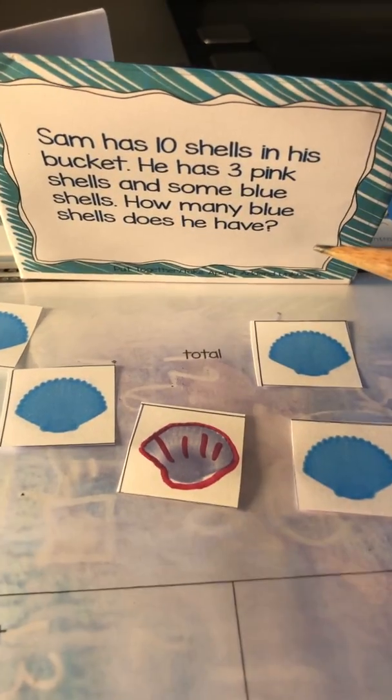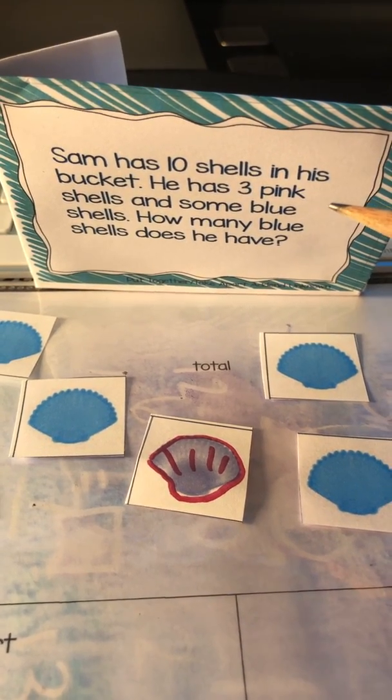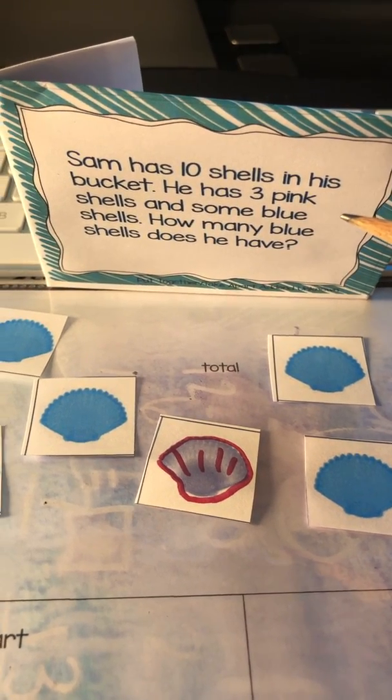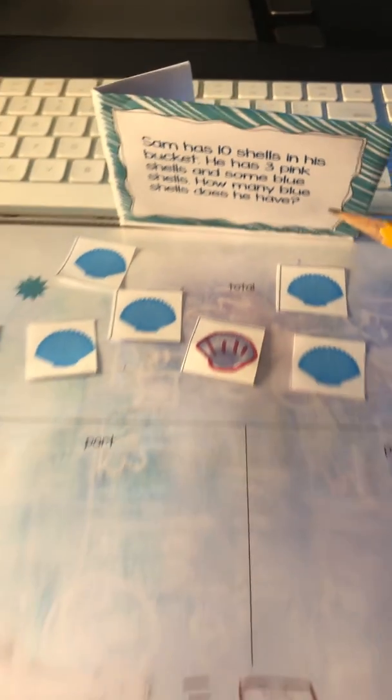Okay, so let's look at our word problem. It says Sam has ten shells in his bucket. He has three pink shells and some blue shells. How many blue shells does he have?